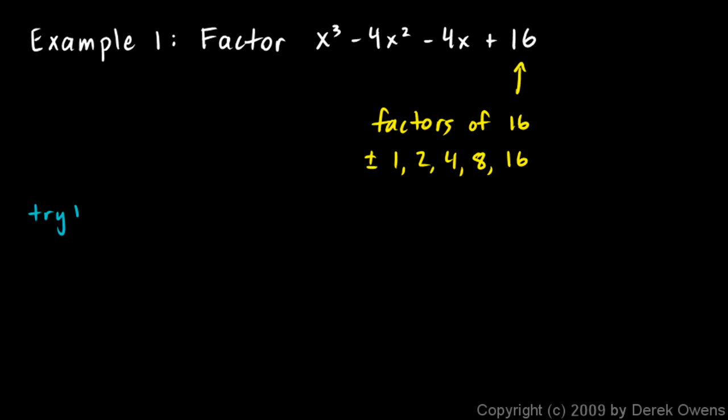We'll start off, we'll try 1. So let's set up the synthetic division. 1 here, and let's write our coefficients here: 1, minus 4, minus 4, and 16. And let's do the synthetic division. Start with 1. 1 times 1 is 1. 1 plus negative 4 is negative 3. Then we multiply by 1 again, and we get negative 3. And we add here, and we get negative 7. Negative 7 times 1 is negative 7. And we add, and we get 9. So that didn't work.